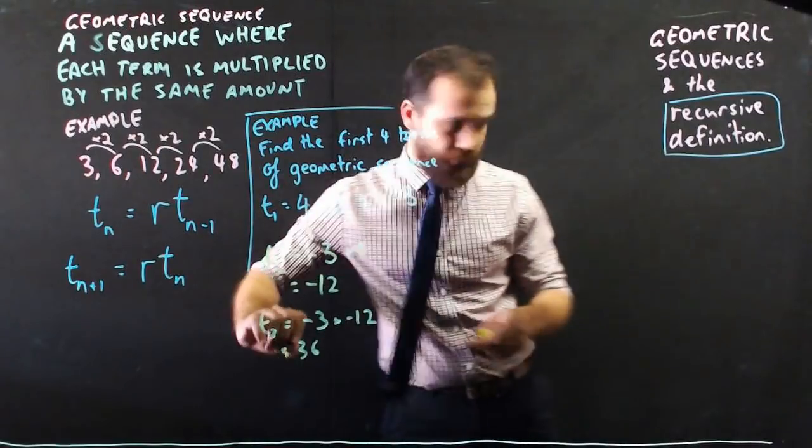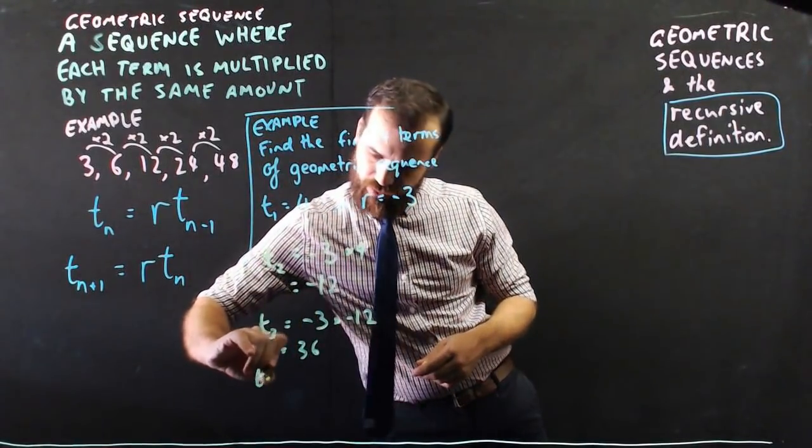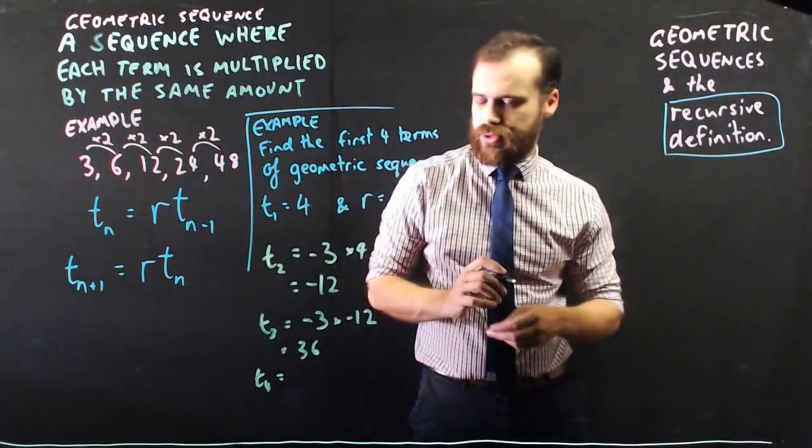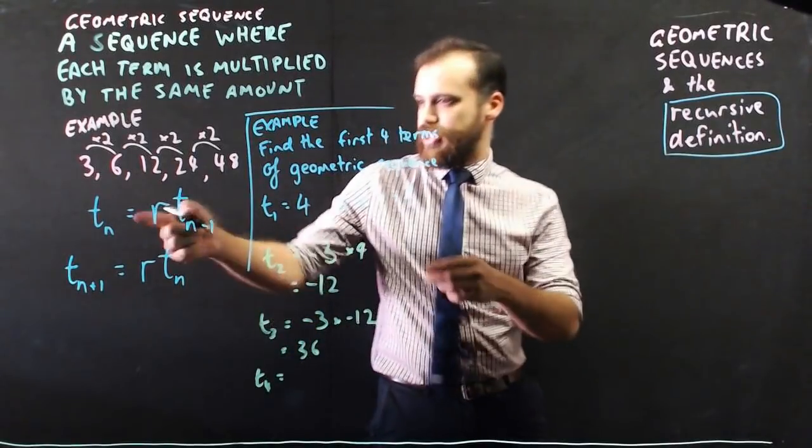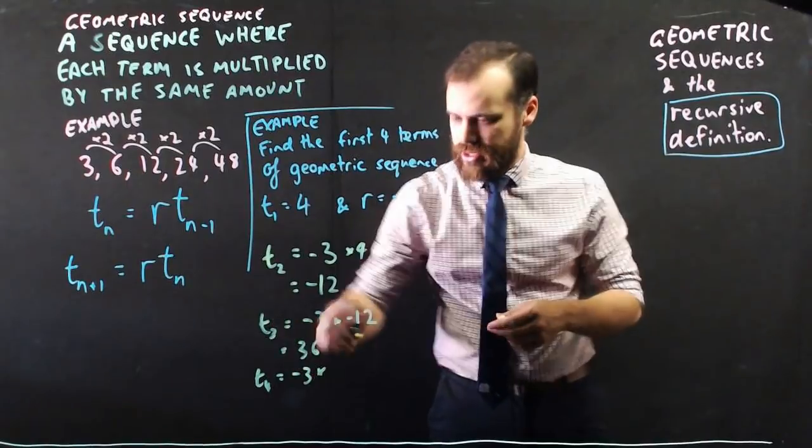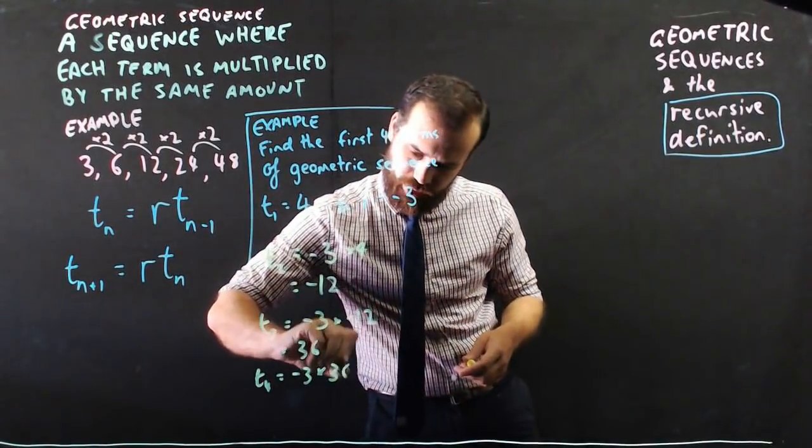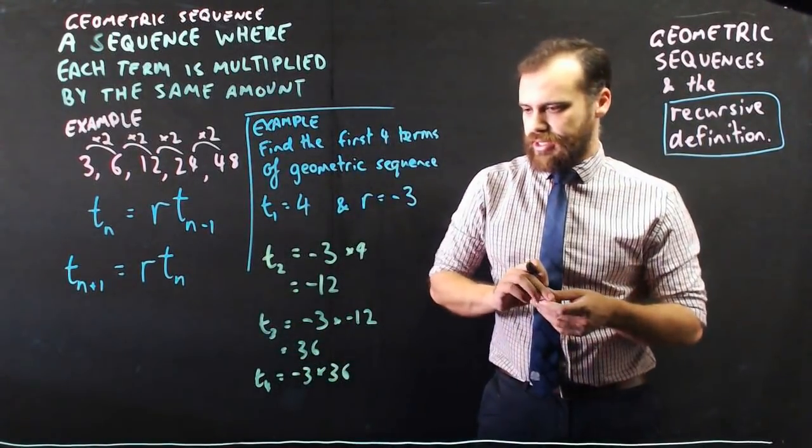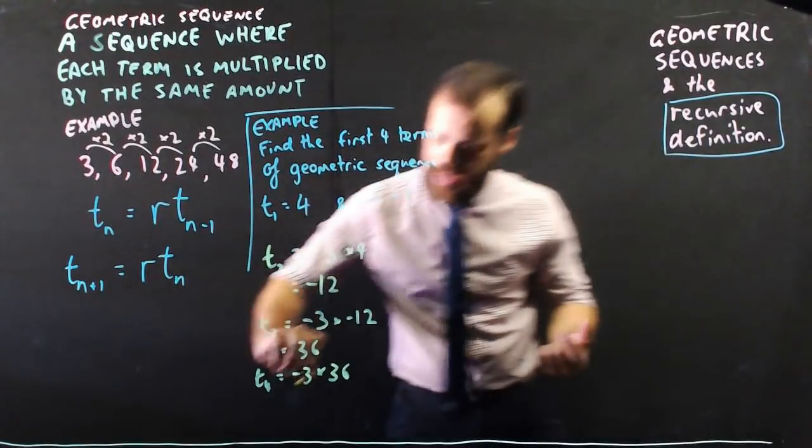And finally term 4 is going to be equal to the common ratio negative 3 times term 3 which is 36, and that's going to be negative 108.